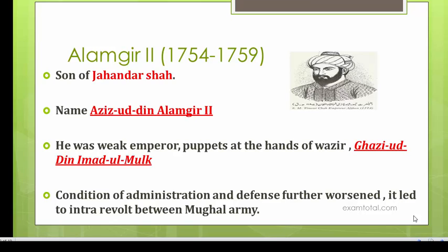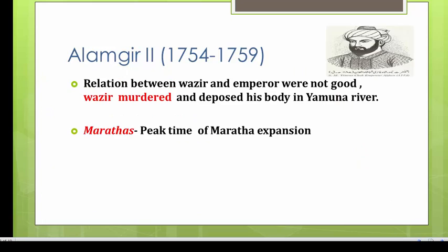During the time of Alamgir II, the overall condition of administration and defense was so bad that it led to various uprisings and revolts. Even the soldiers were not paid salaries and were dying of hunger, which led to intra-revolt within the Mughal army itself. The relationship between Emperor Alamgir II and his vizir Imadul Mulk was so bad that the vizir got the emperor murdered and disposed of his body in the Yamuna river in 1759.